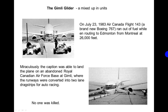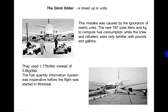This mistake was caused by the ignorance of metric units. The new 767 used liters and kilograms to compute fuel consumption, while the crew and refuelers were only familiar with pounds and gallons. They used 1.77 pounds per liter instead of 0.8 kilograms per liter. The fuel quantity information system was inoperative before the flight was started in Montreal.